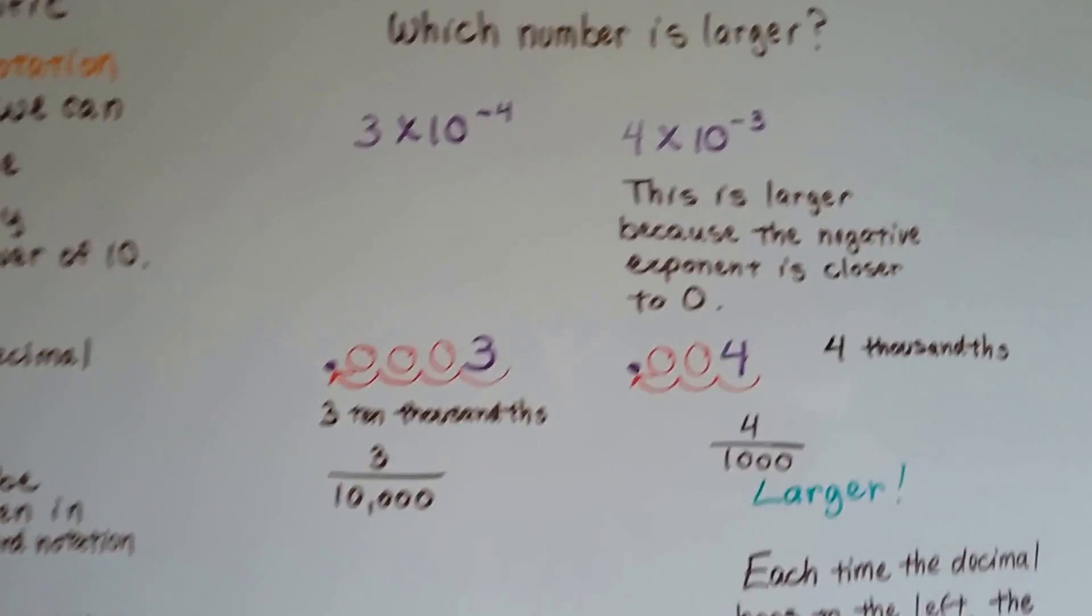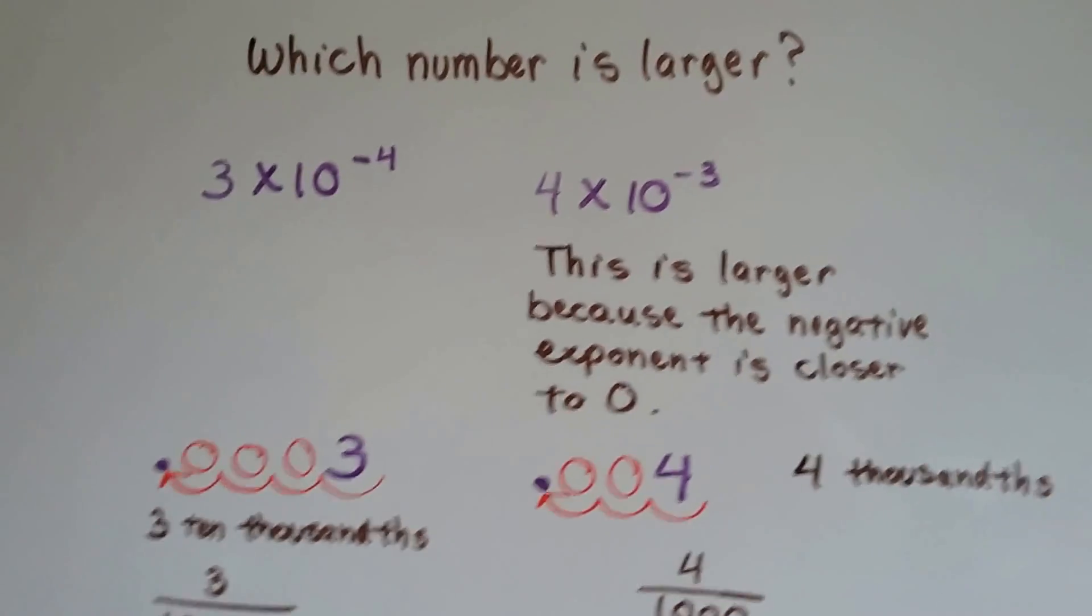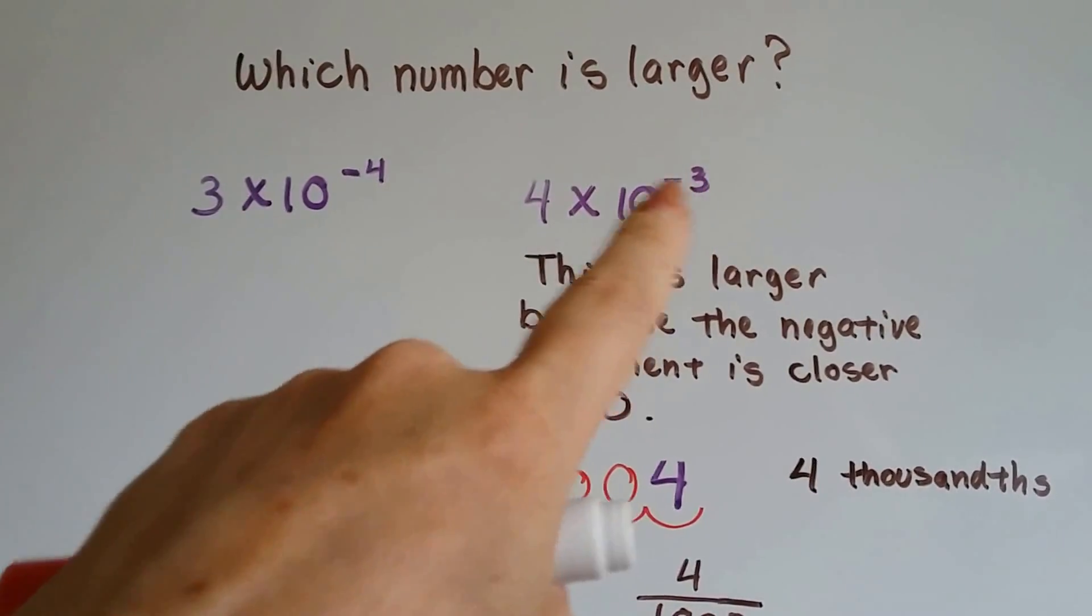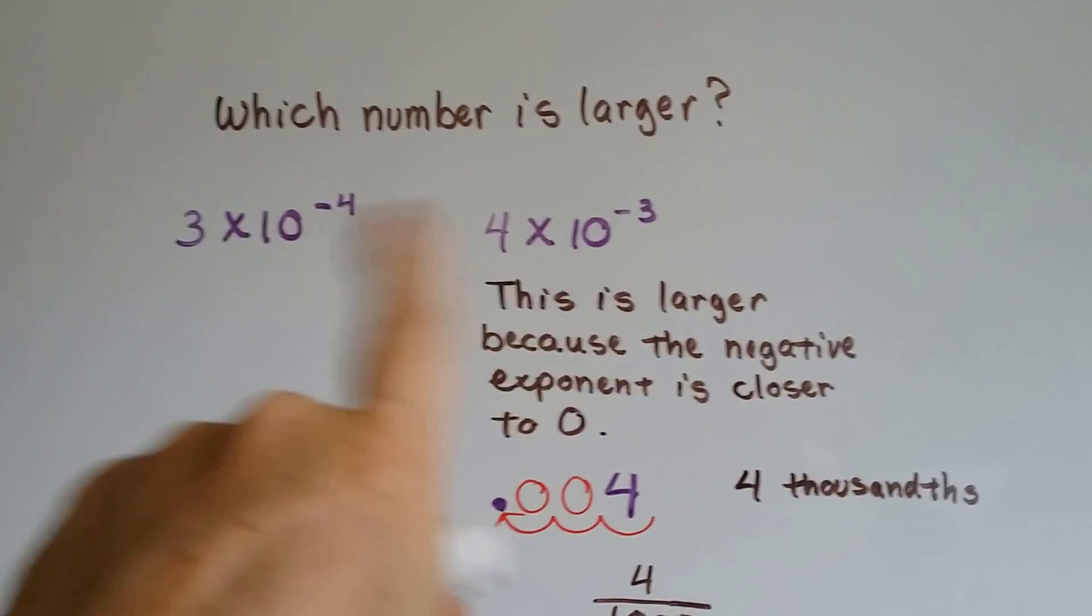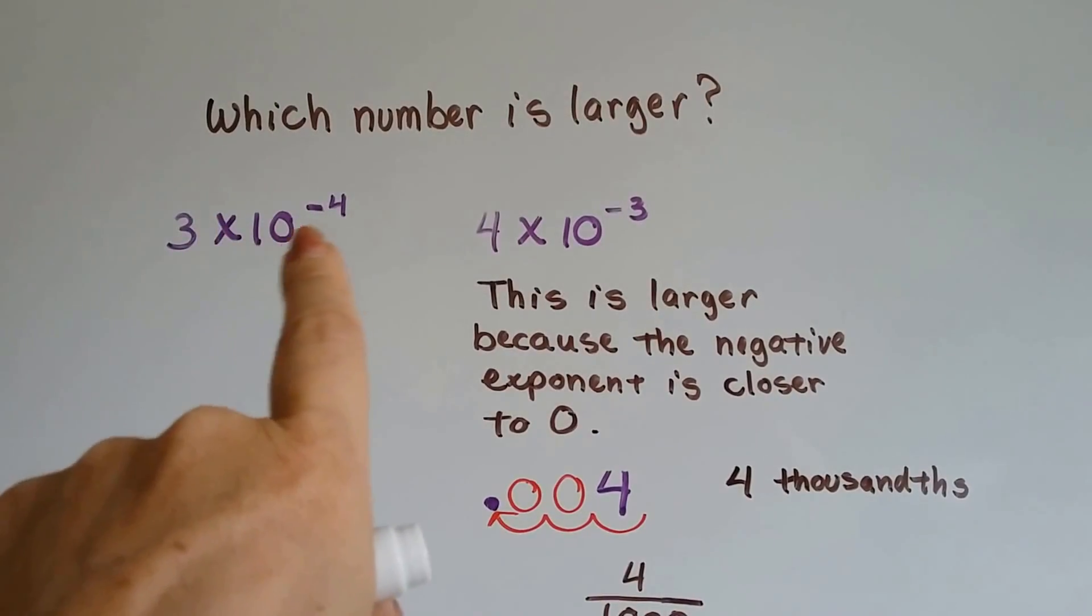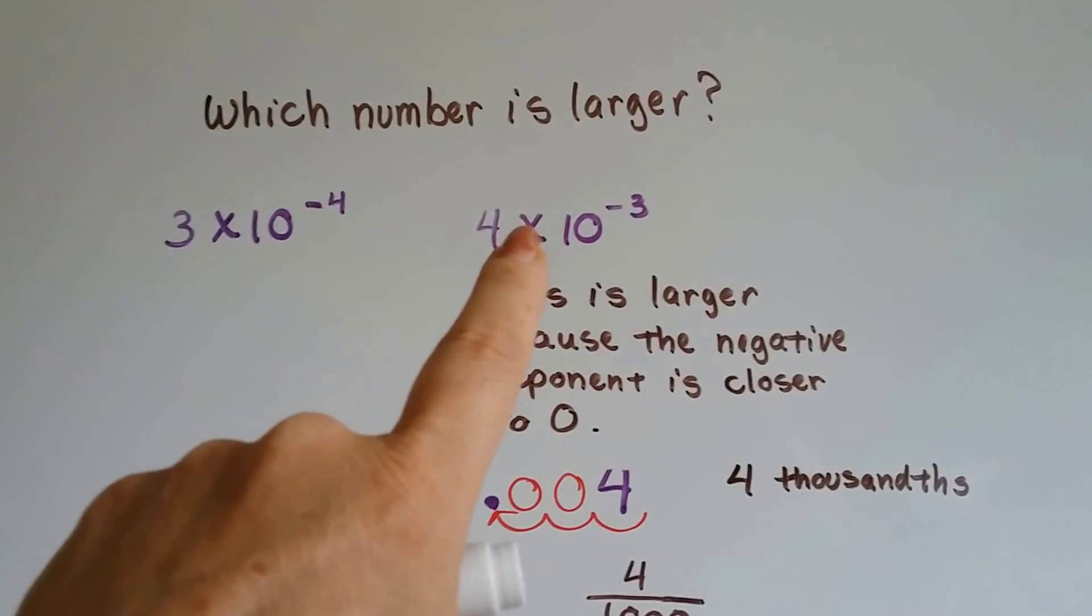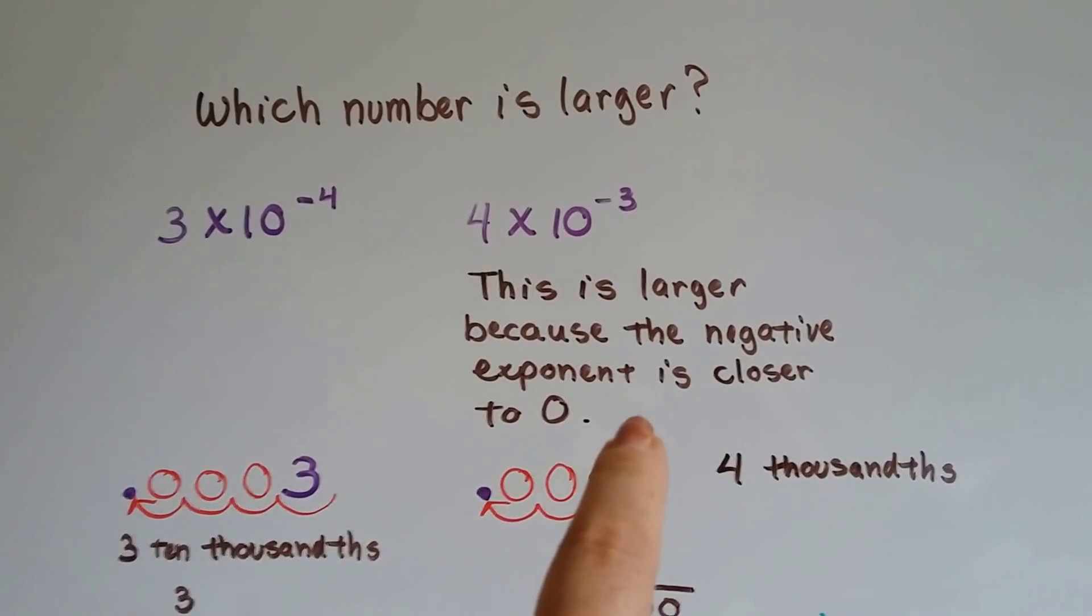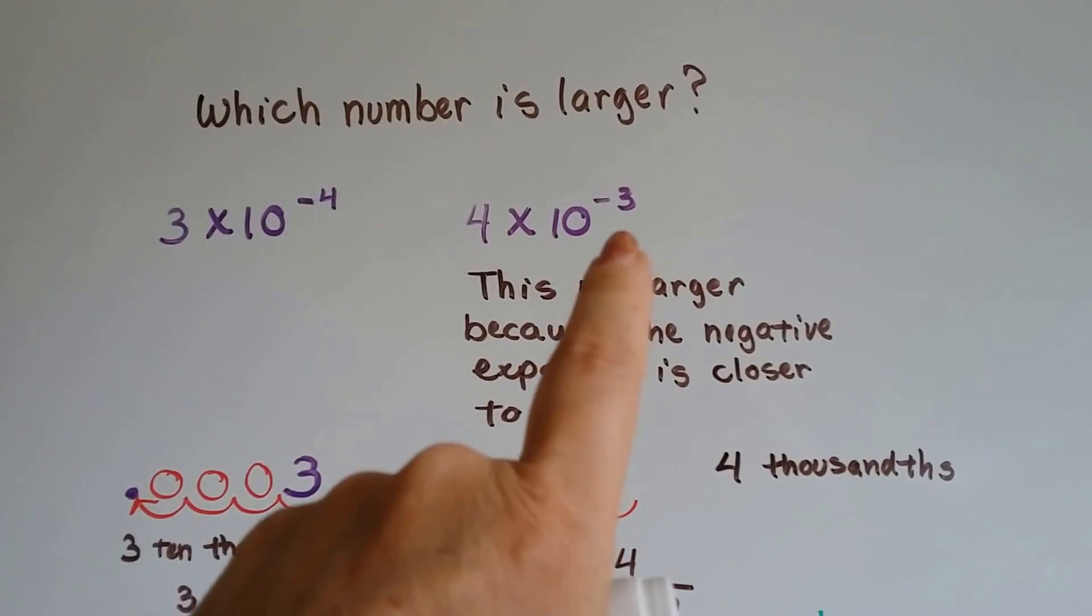We can also figure out which number is larger. If we've got 3 times 10 to the negative 4th and 4 times 10 to the negative 3rd, you can just look at these and tell which number is larger. This number is larger, and you know why? Because that negative 3 is larger because the negative exponent is closer to 0.